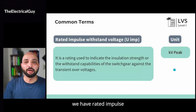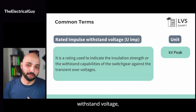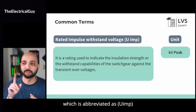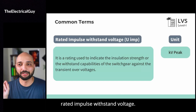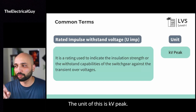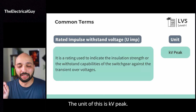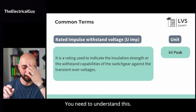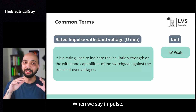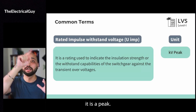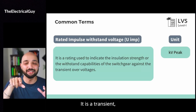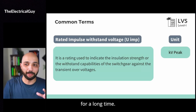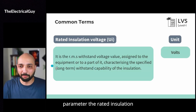Then moving on, we have rated impulse withstand voltage, which is abbreviated as UIMP. The unit of this is kV peak. Now why peak? When we say impulse, it is a peak value. It remains in the system for a very short time — it is a transient, it will not remain for a long time. But when we saw the previous parameter, the rated insulation voltage, it is there for a long time.